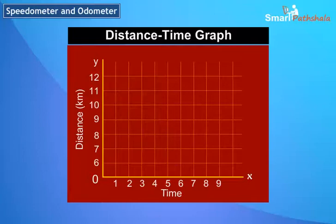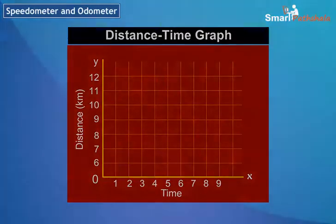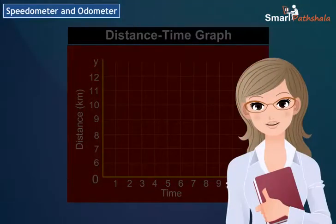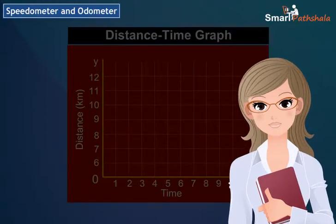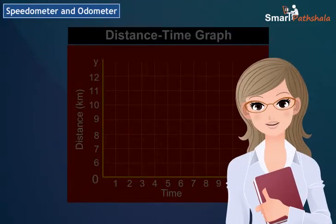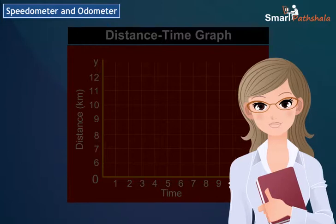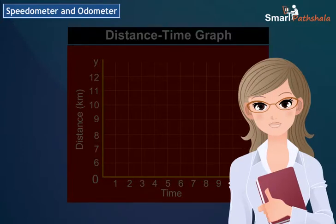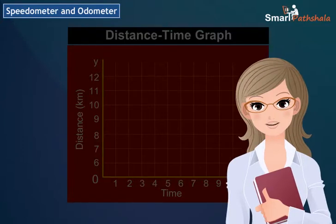We can also plot a distance-time graph. By using the reading in the speedometer, we can note the speed of the vehicle at any point of time. Hence, in this chapter we have learnt about units of time and speed, speedometer and odometer.